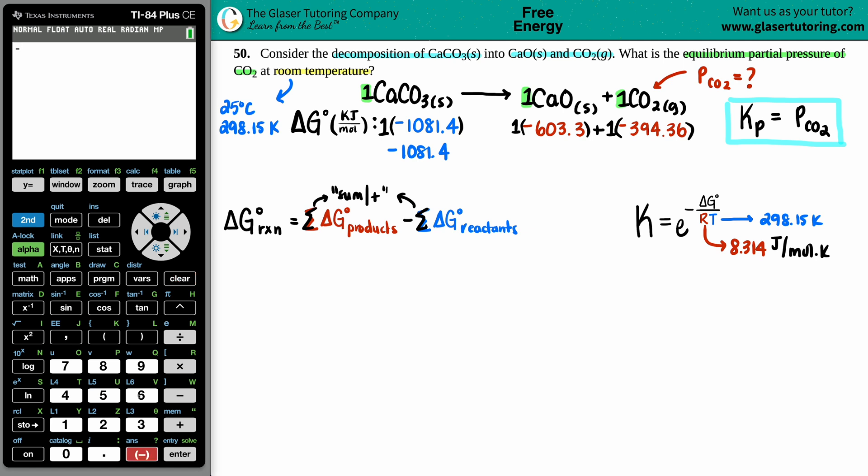And now let's see what the sum of the products is. I'm going to say -603.3 minus 394.36. I'm just checking to make sure that I didn't input anything incorrectly. That looks good to me, -997.66.